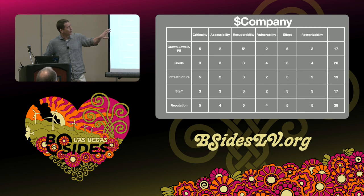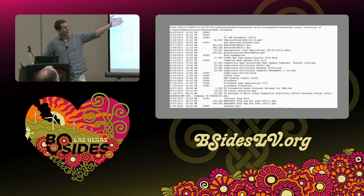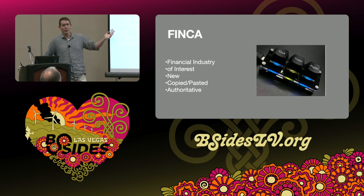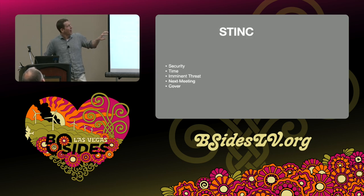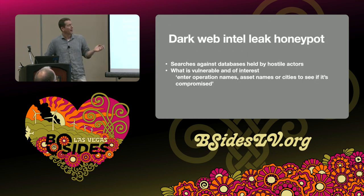Very quickly — we knew what Conti was coming after: emails, databases, source code, insurance coverage, and banking information. How do we define intelligence as CIA? It was foreign, of interest, new, clandestinely acquired, and authoritative. In the cyber threat intelligence financial world: is it financial industry relevant? Is it of interest? Is it new, or copied and pasted from Bleeping Computer? And is it authoritative? We look at security, timing, and imminent threat. We're not going online to search because this is a traditional honeypot — you wouldn't put your information in one of these or search the dark web, because criminal actors use that to build back-end databases of what you're looking for.